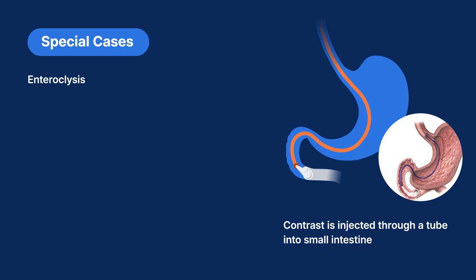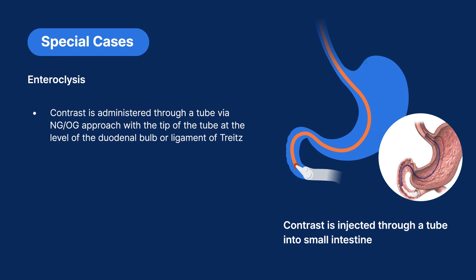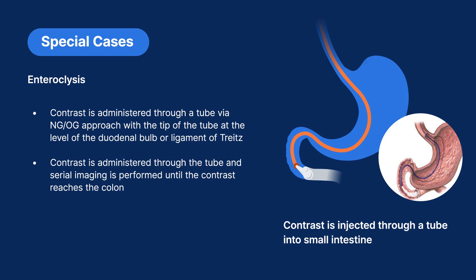Another special case is a study for enterocolitis called enteroclysis. These procedures may be performed by administering contrast through a nasogastric or orogastric tube, where the tip of the tube is at the level of the duodenal bulb or ligament of Treitz, bypassing the stomach. Contrast is administered through the tube and serial imaging is performed until the contrast reaches the colon.